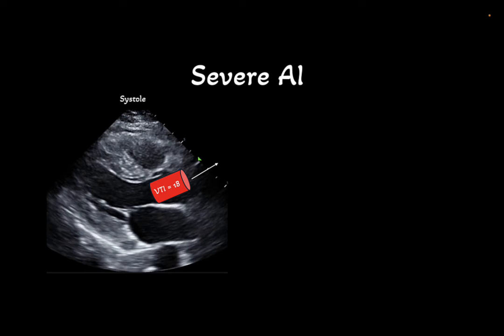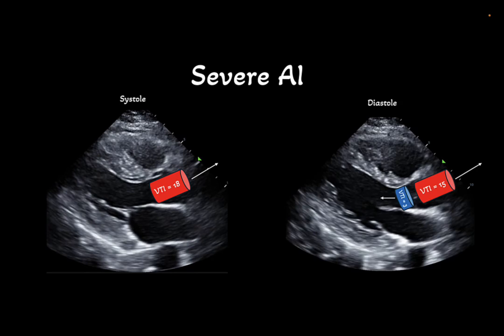Now the effect of severe AI is important to understand as it leads to an overestimation of the true VTI. While in systole you may measure a VTI of 18, however in diastole some of that blood refluxes into the LV. Thus the end organs such as the brain, kidney, and liver only see a VTI of say 15. Therefore, a patient with moderate to severe AI should have a VTI above 22 at baseline. A VTI of 18 is inappropriately normal in these patients.